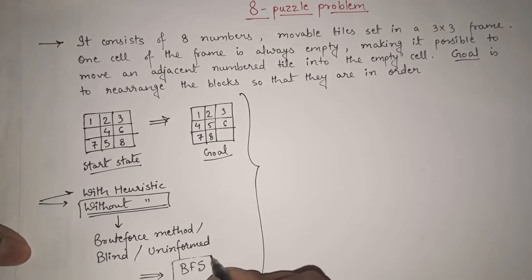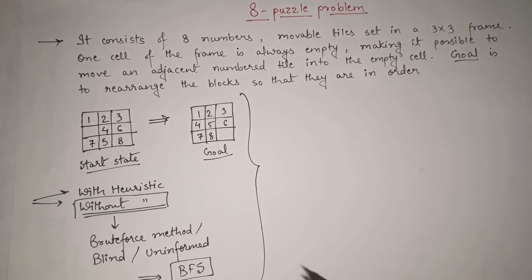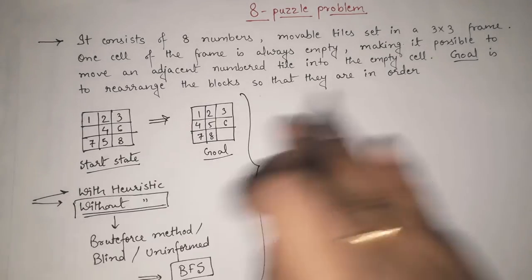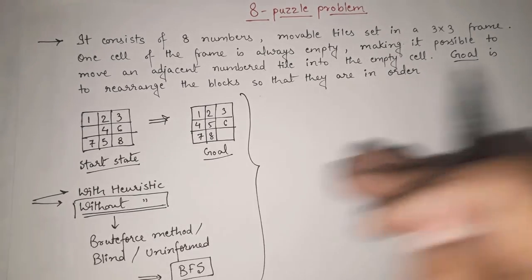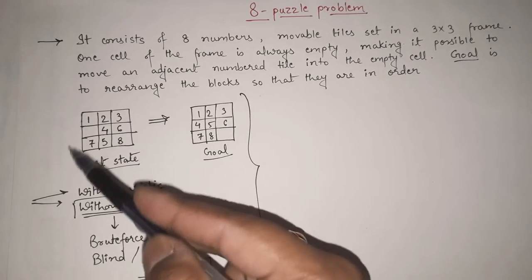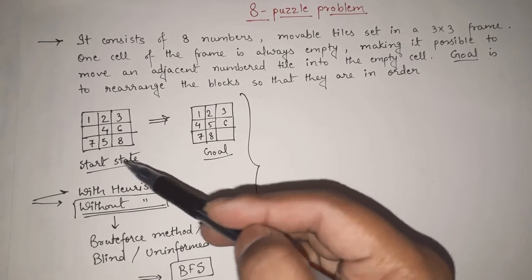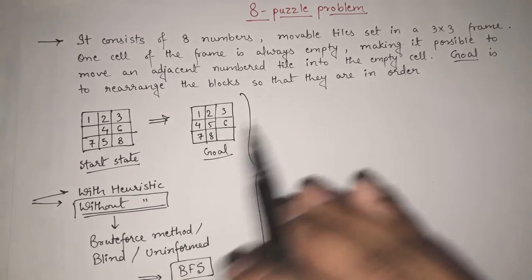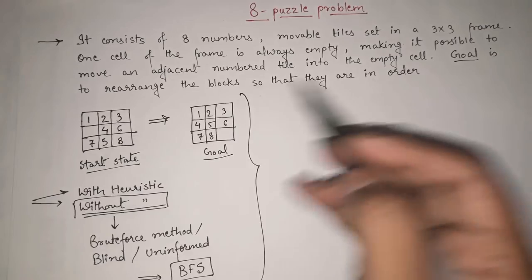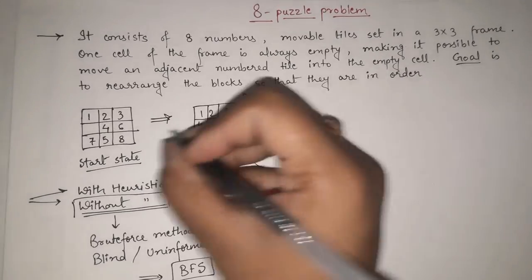You must know the difference between breadth-first search and depth-first search. In breadth-first search, as the name indicates, we explore breadth by breadth — meaning we explore the tree level by level. We will start with our start state and go on exploring one level at a time until we get our goal state. For example, this is my start state.